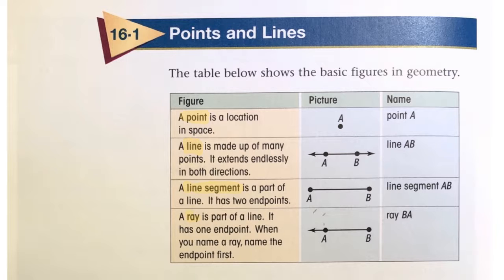A ray is a part of a line. It has one endpoint. When you name a ray, name the endpoint first. So, we have our A and B. But this is called ray BA because the endpoint is B.